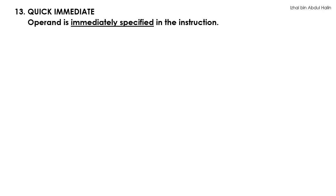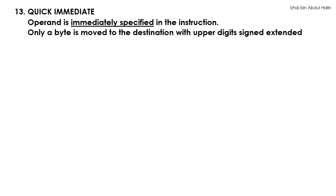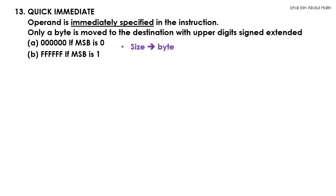Another difference between this addressing mode and the immediate addressing mode is that it only permits byte-sized operands to be used. However, the result is a long word — this is because bits at higher positions from the operand are sign-extended, they are packed with zeros or ones depending on the value of the MSB of the operand. Thus, although the permitted operand size is only a byte, the result is a long word. Let's do an example to clarify this.